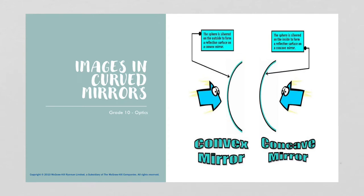In this video, we're going to learn about images and curved mirrors, and we'll figure out how to locate an image when using a curved mirror. There are two different kinds of curved mirrors. The first one is convex mirrors — they flex outwards towards you, like looking at the outside of a ball. A concave mirror caves inward, so when you're looking at it, you're looking at the inner cave of it.